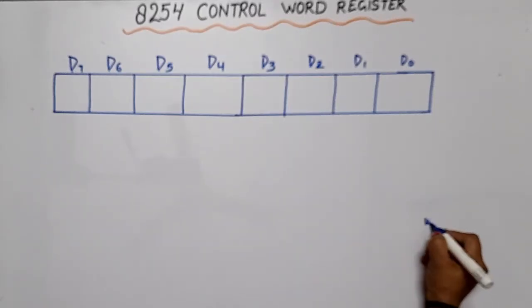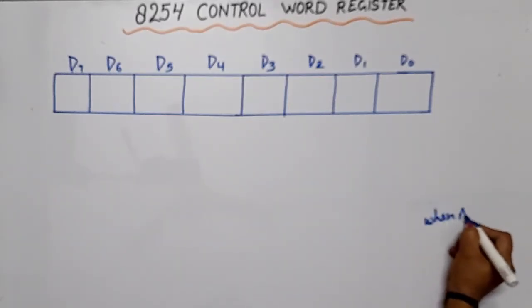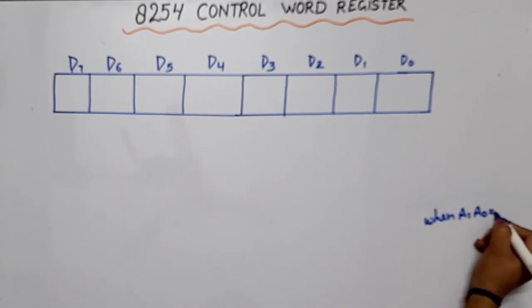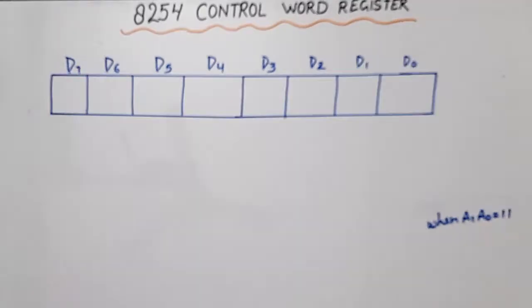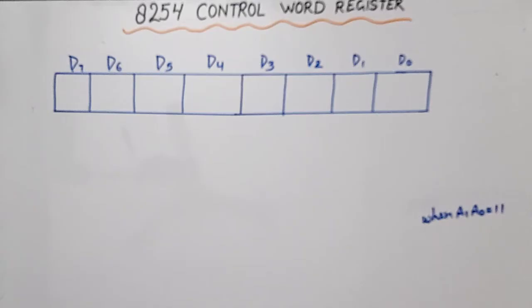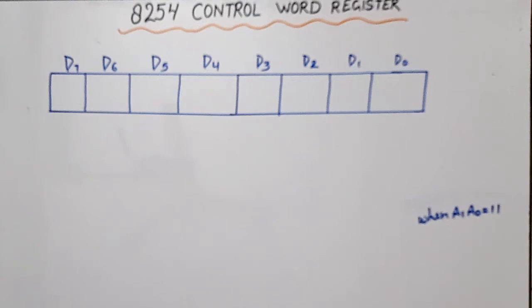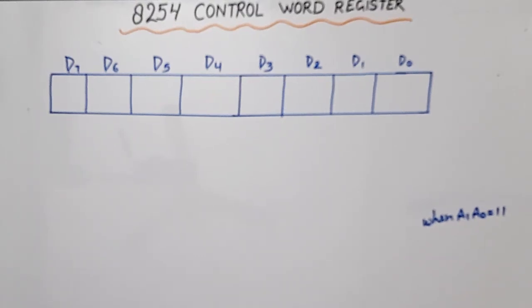The control word register is selected when A1 and A0 are both equal to 1 — that is, A1 A0 = 11. This control word register decides which counter will be selected, which mode will be performed, and whether the counter will count in BCD or binary. This is an 8-bit register, meaning there are 8 flip-flops, D0 to D7.